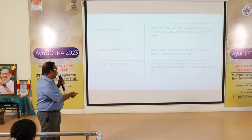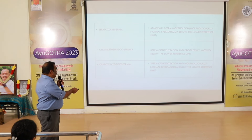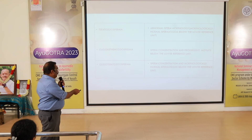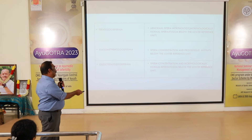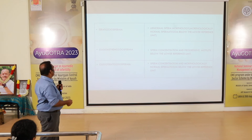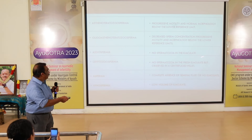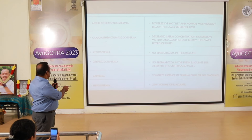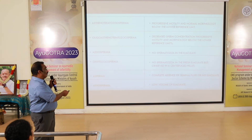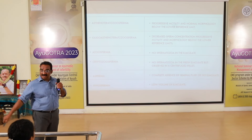Oligoteratospermia means sperm concentration and morphologically normal spermatozoa are both below the lower reference limit. Asthenoteratospermia means progressive motility and normal morphology are both below the lower reference limit. Oligoasthenoteratospermia means all parameters are decreased — sperm concentration, progressive motility, and morphology are all below the lower reference limit.